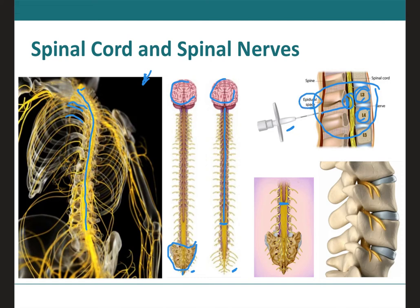The epidural space is the space located above the dura mater, which we will see later on. In the image on the right, we can see how the spinal nerves exit through openings left by the combination of two vertebrae — the superior and inferior vertebrae — which form the intervertebral foramen. The spinal nerves come out through them and can become very, very long, as shown here for the upper limb.